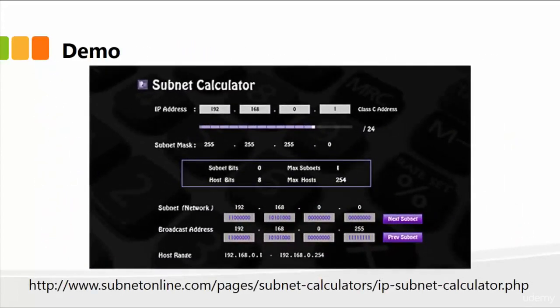I'm also going to show you a quick demo. You can manually calculate all these subnets, but online there are several calculators — hundreds of calculators — where you can simply specify the IP address, slash 24, 25, or whichever satisfies your requirement, and it will calculate the subnets for you. It's just that easy. But I wanted to explain how to do this manually and how to borrow the bit order. So let me go online and open up my browser to demonstrate using a subnet calculator. I've come across this wonderful site — I've placed the URL — it's a very easy to use calculator, and you'll have fun with it.